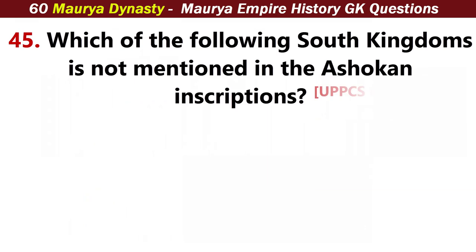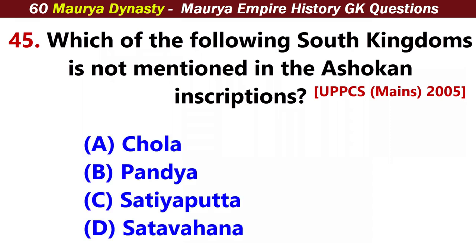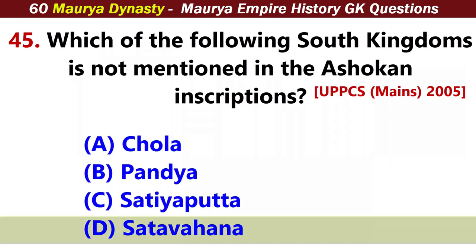Which of the following South Indian kingdoms is not mentioned in the Ashokan inscriptions? Answer D: Satavahana.